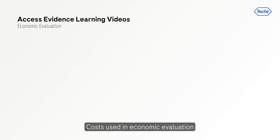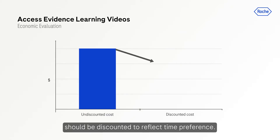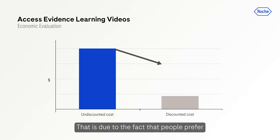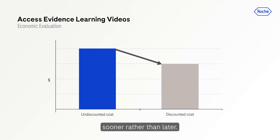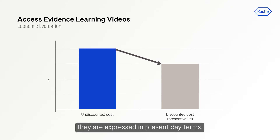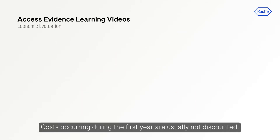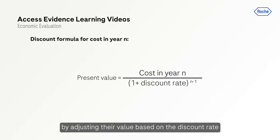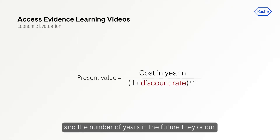Costs used in economic evaluation should be discounted to reflect time preference — that is, due to the fact that people prefer to defer costs and receive payments sooner rather than later. Everybody would rather be given ten dollars now than be promised them in ten years' time. When costs are discounted, they are expressed in present-day terms, called their present value. Costs occurring during the first year are not usually discounted; costs in subsequent years are discounted by adjusting their value based on a discount rate and the number of years in the future they occur.